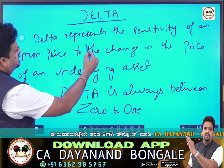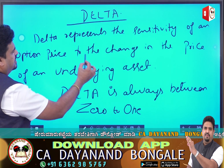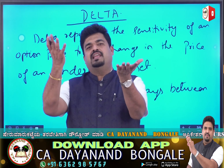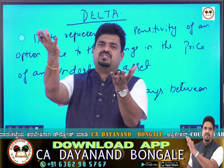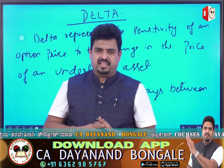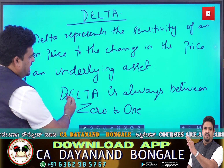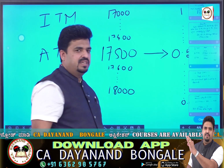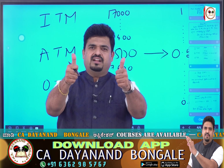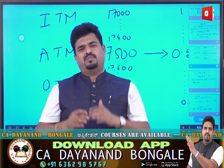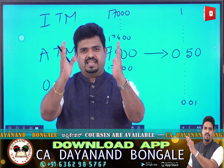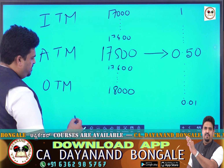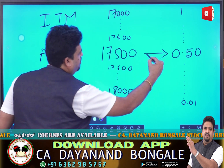Delta represents the sensitivity of an option price to the change in the price of an underlying asset. Delta is always between 0 and 1. At the money, Delta is equal to 0.5.